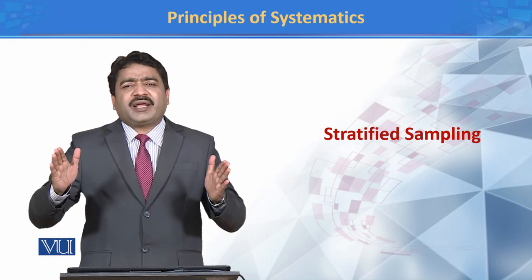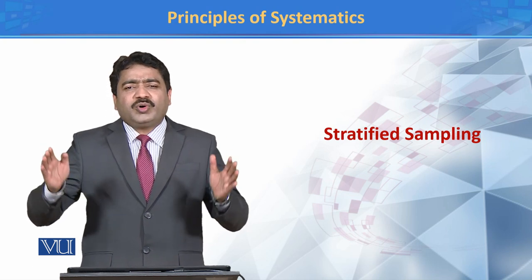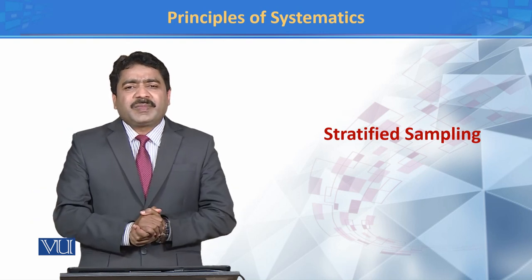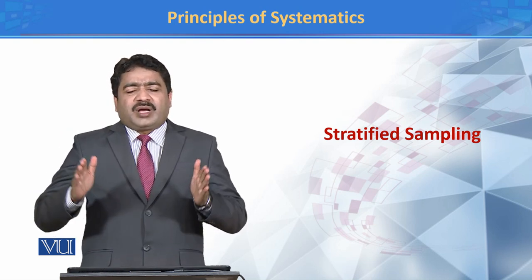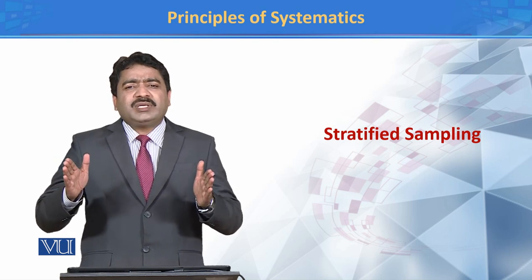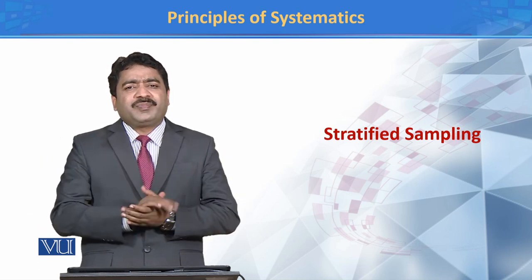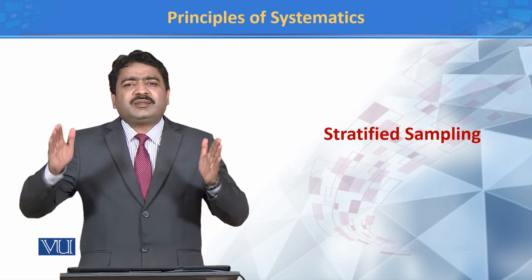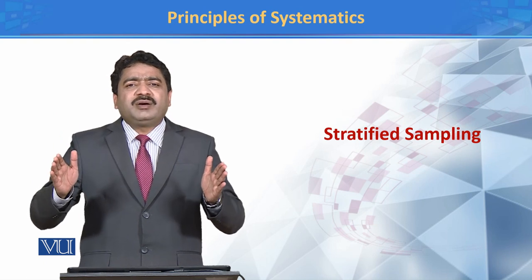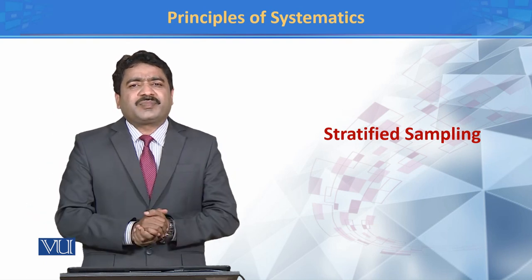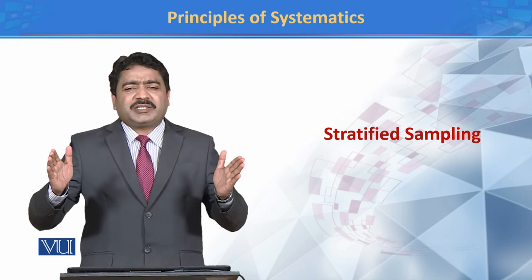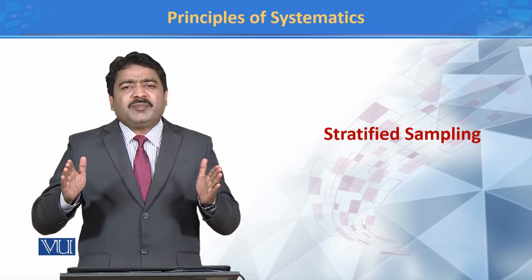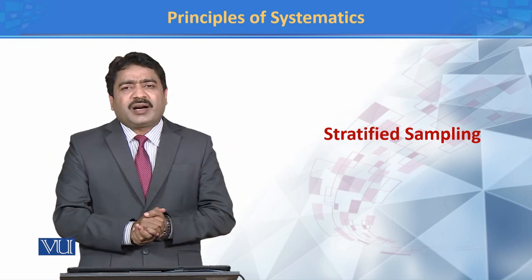यहां पर जो हमने criteria रखा वो age था, तो age की base पर हमने 3 categories बनाईं. अब क्यूंकि हर group के अंदर جو individuals हैं उनकी तादाद बहुत ज़्यादा है, हमारे लिए ये possible नहीं है कि हर group के तमाम individuals का data record करें. जैसे, हम لاहور की population पر study करना चाहते हैं, तो ये possible نहीں है کہ ہم لاهور के तमाम individuals का data record کریں.